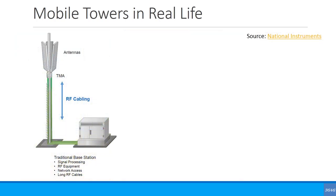You would have a mast with antennas on top of it, and traditionally a little cabinet on the side containing the base station. For a three-sector site showing three different antennas, you would have a baseband unit (BBU) plus a radio unit. The baseband unit can be common for all three sectors, but you would generally need a separate radio unit for each, or a combined radio unit.